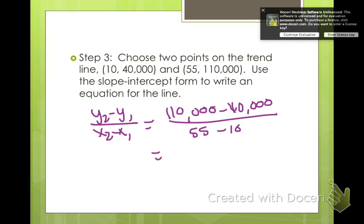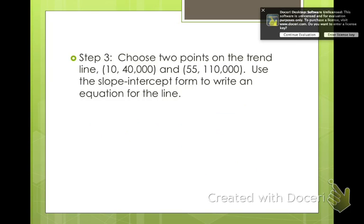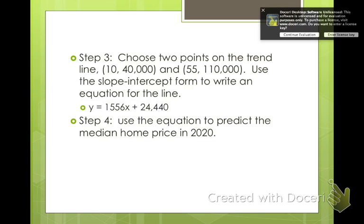Go ahead and simplify that. You get 70 over 45, and when you divide that you get 1.5 repeating, so about 1.6. It crossed at about 24,440.